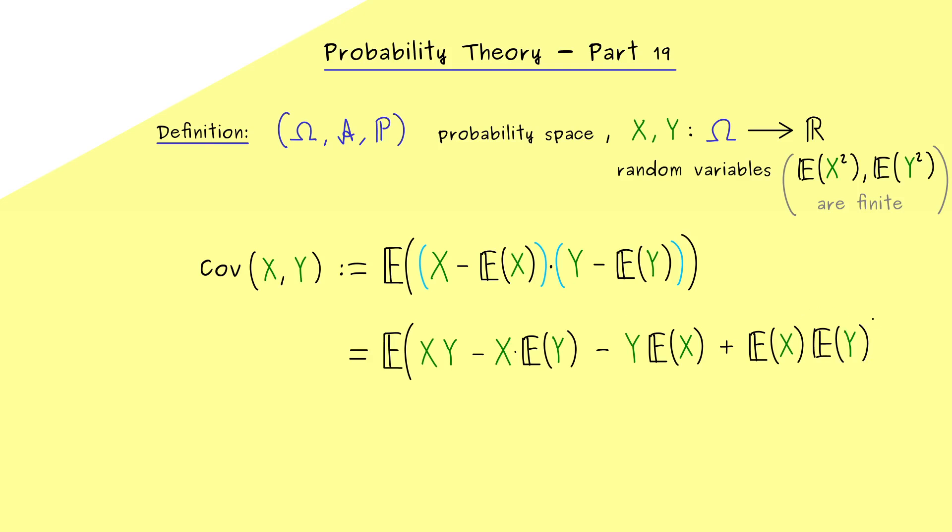So you see, indeed, the same calculation as in part 16. In fact, this also means that now in the next step, we can use the linearity of the expectation. So we pull the minus and addition signs out and also the scalars.